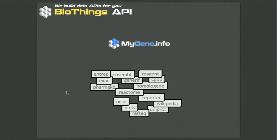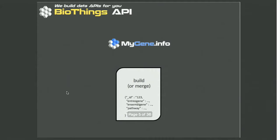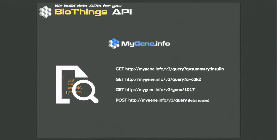Let's take MyGene. It has 15 different data sources. Each of them is integrated individually as a collection of JSON documents in a Mongo database. These resources are then merged or combined together to constitute what we call a build. The merged documents are sent to an indexing engine — in our case, we use Elasticsearch. Finally, we have a frontend used to query that index and serve the data to our end users through different API endpoints.